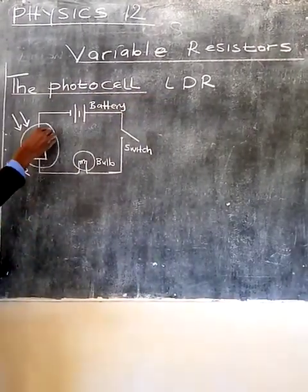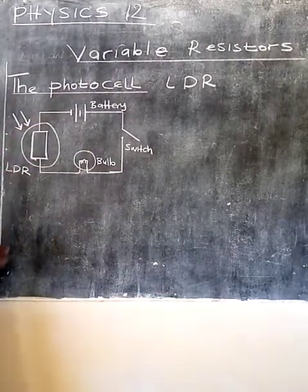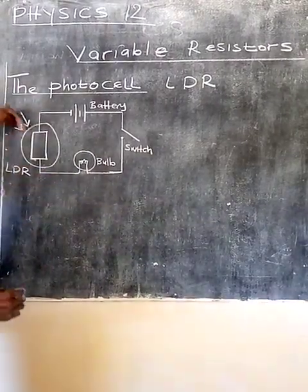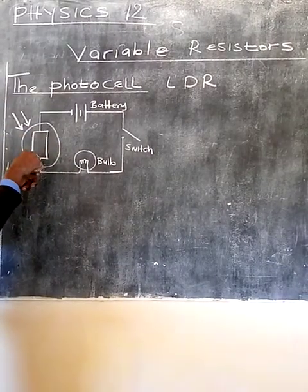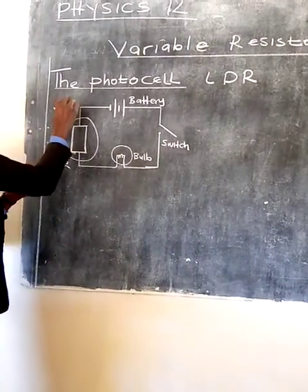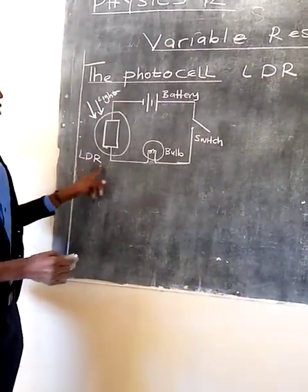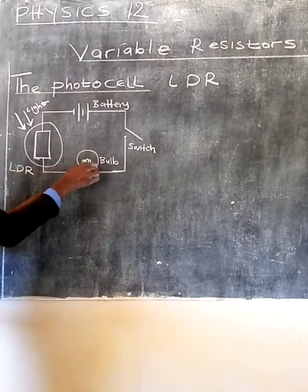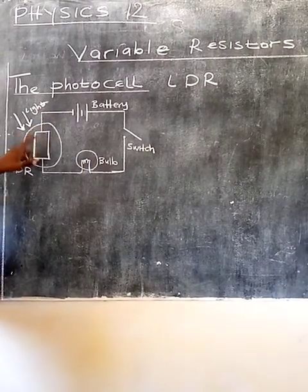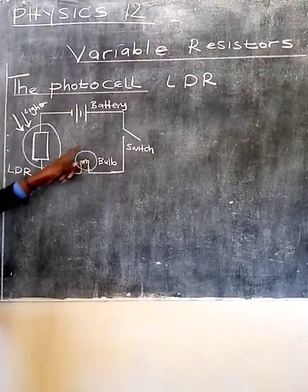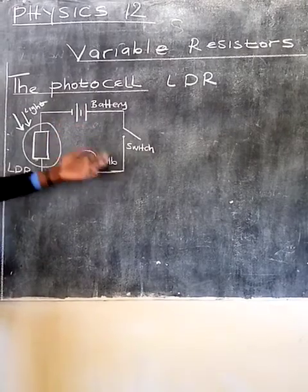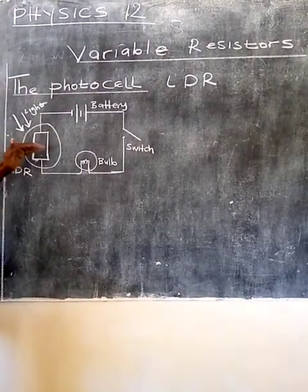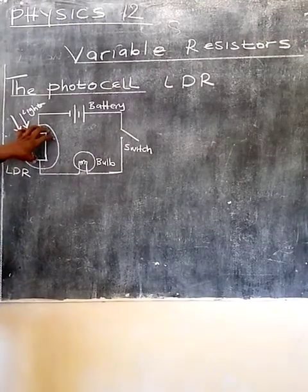The symbol for an LDR consists of the resistor symbol with a circle and arrows representing rays of light coming towards it, meaning it depends on light. So this is an LDR. For this circuit to be functional — for the bulb to be on — it is going to depend on this component's operation. We have the battery, the switch, and these two components. What is important is to understand the action of the LDR.